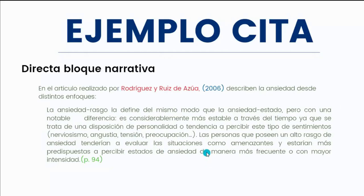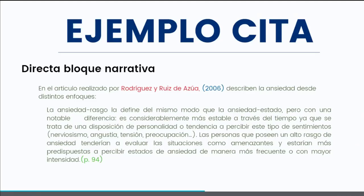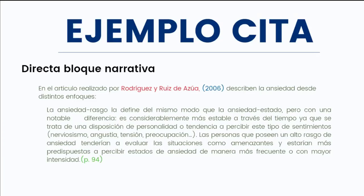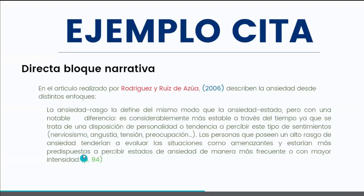En el formato narrativo, si menciono 'el artículo realizado por Rodríguez y Ruiz de Azúa en 2006 describe la ansiedad desde distintos enfoques', estoy mencionando lo que ellos dijeron. La característica de la cita directa en bloque es que va con punto y aparte y son más de 40 palabras. Aquí no se ponen entre comillas las palabras textuales; en su lugar, doy un punto y aparte con una sangría, que puede ser un tab en el teclado. Si lo pusiera de forma parentética, los tres colores: rojo, azul y verde —responsable, fecha y fuente— irían todos juntos al final.